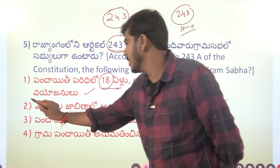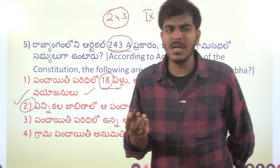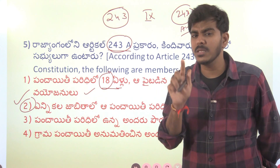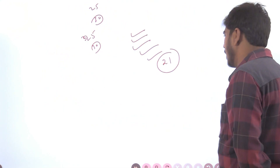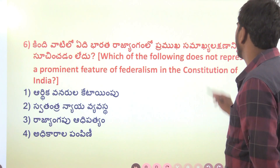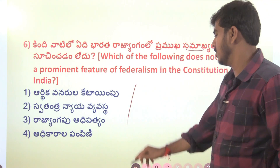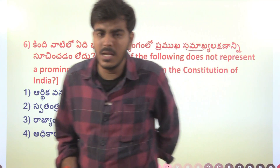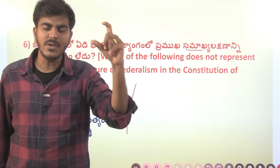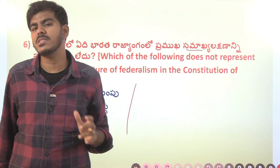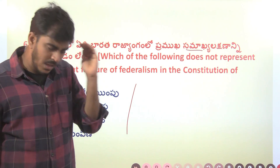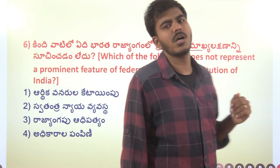The answer is the second option — this is a very important question. Next question: regarding the federal system — Samarki Vedanta, Kendra Prabhutvam, Rashtra Prabhutvam and Samarki Vyavastha. In English this is the Federal system. Federalism with Strong Center — the example is Canada.